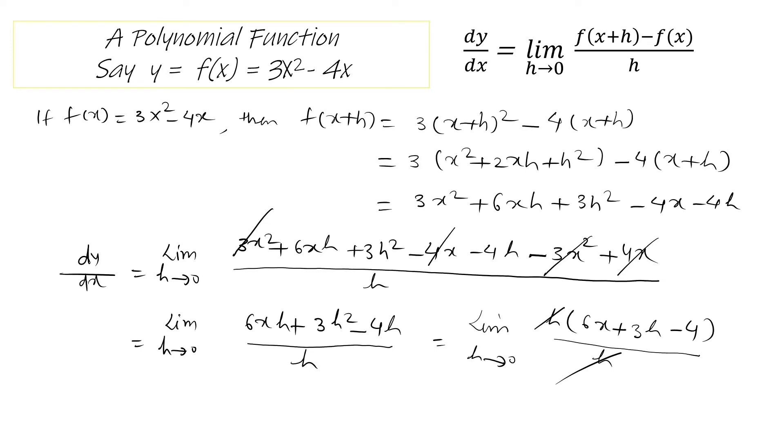As h goes to 0, 3h will also go to 0, so what remains is 6x minus 4, as the limit of the function.